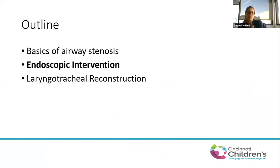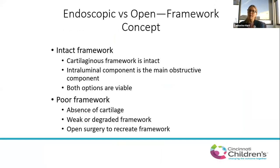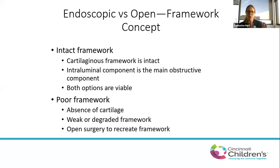To effectively treat a stenosis endoscopically, you need an intact framework — the cartilage structure of the airway must be present and adequate, and the obstruction should be primarily within the lumen. If the framework is inadequate — missing cartilage, weak or collapsing cartilage — you can dilate all you want and may temporarily open things up, but without adequate framework support it will re-stenose. Those patients ultimately require open surgery to recreate the framework.